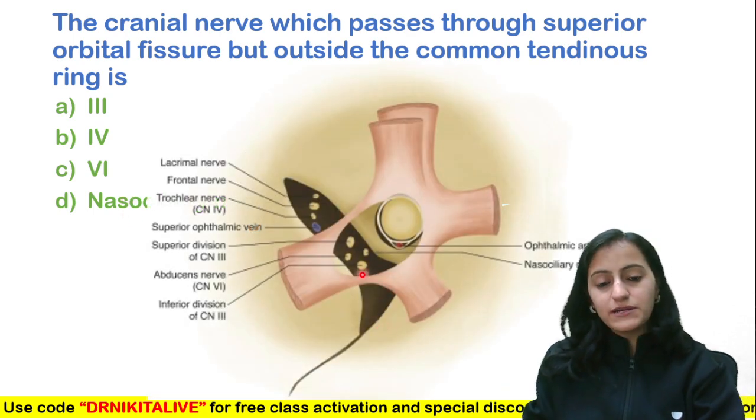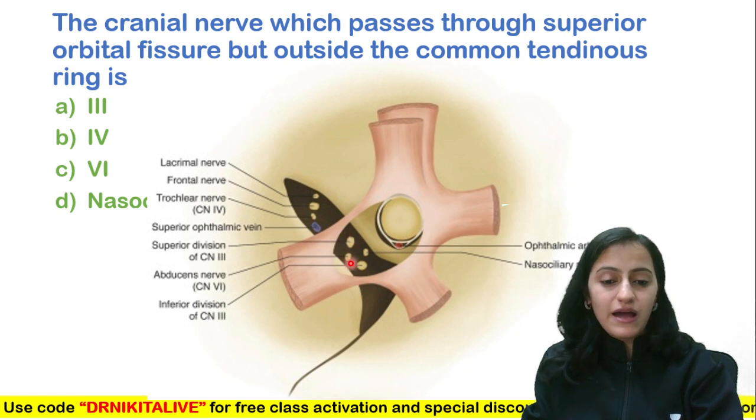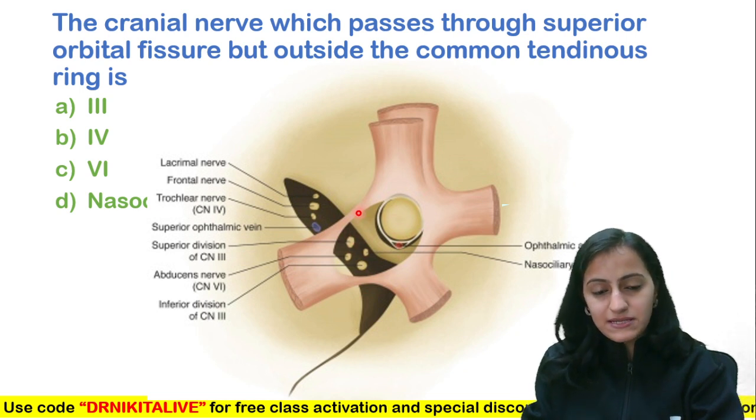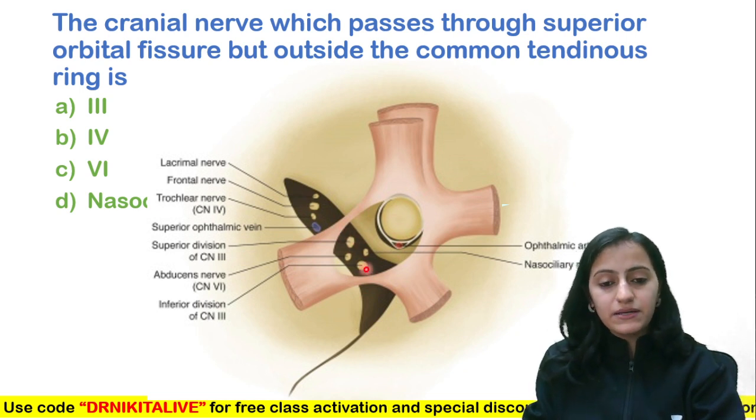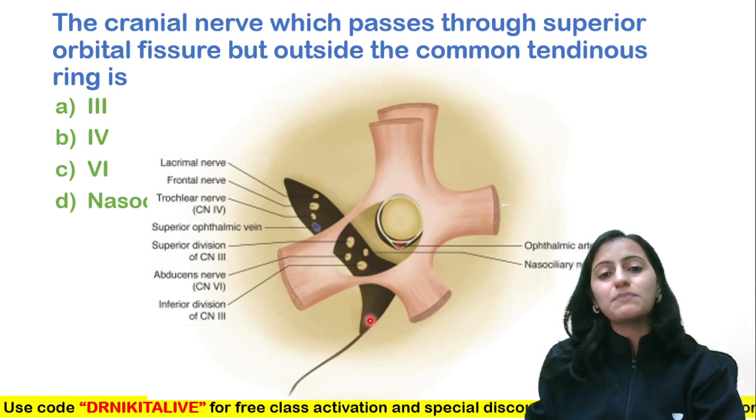This is the superior orbital fissure. You can see there is a part within the common tendinous ring, a part above it, and a part below it.